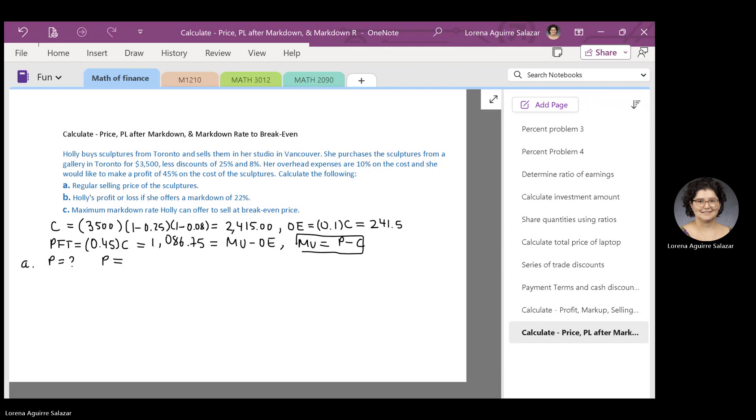Notice that from this equation right here, we can say that P equals markup plus cost. And from the equation we wrote right here, we have that markup is actually the same as profit plus overhead expenses. We have profit plus overhead expenses plus C, and that's P. Then, to find P, we add all the numbers we have, cost, overhead expenses, and profit.